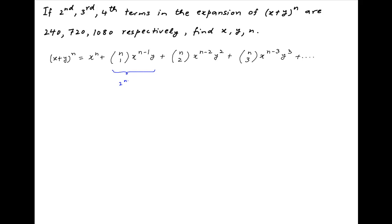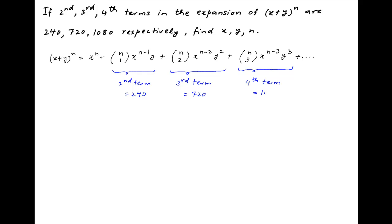We are given that the second term is equal to 240, the third term is equal to 720, and the fourth term is equal to 1080. Therefore, the second term, which is n times x^(n-1) times y, is equal to 240. Let's call this equation 1.